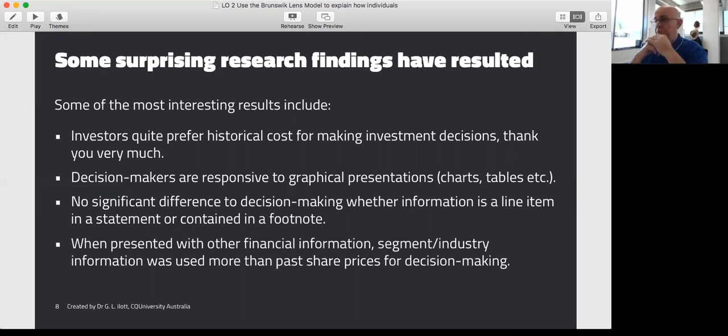When presented with other financial information, segment or industry information was more useful than past share prices. For example, if decision makers are deciding whether to buy Qantas shares, they might take note of past performance of Qantas, but they pay more attention to what are the current events in that industry. They might note that the price of aviation fuel is going up at a rapid rate, and they might make a decision that that's going to be detrimental to the whole airline industry, and therefore that will influence their decision whether or not to buy Qantas shares at their current price.